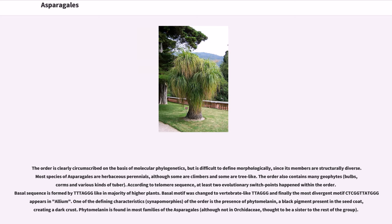Since its members are structurally diverse, most species of Asparagales are herbaceous perennials, although some are climbers and some are tree-like. The order also contains many geophytes — bulbs, corms, and various kinds of tuber.